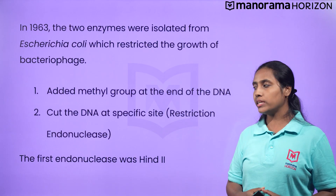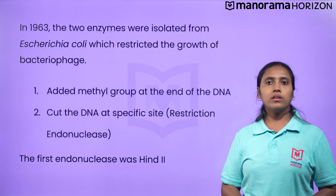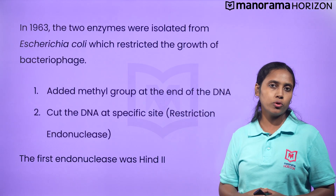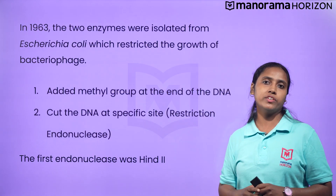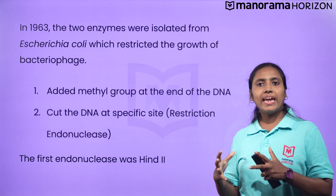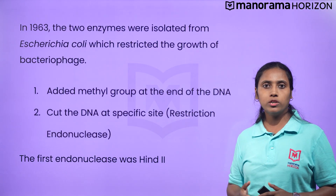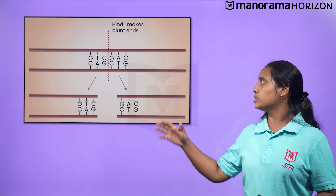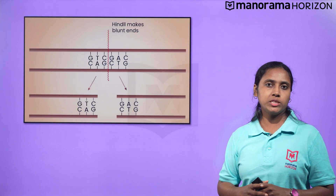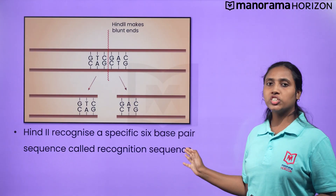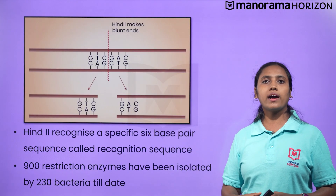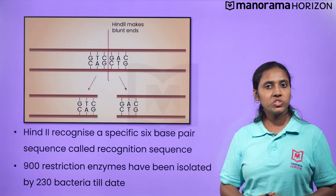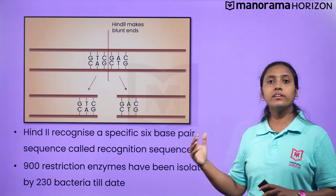The first restriction endonuclease was HindII. The functions of these endonucleases are dependent on specific DNA nucleotide sequences and were characterized five years later. HindII always cuts DNA molecules at a particular point by recognizing a specific sequence of six base pairs, known as the recognition sequence. Other than HindII, there are 900 restriction enzymes isolated from 230 bacterial strains, each recognizing different recognition sequences.